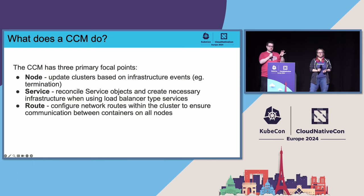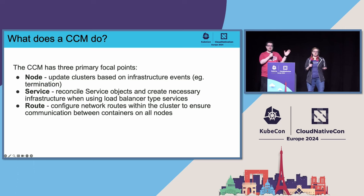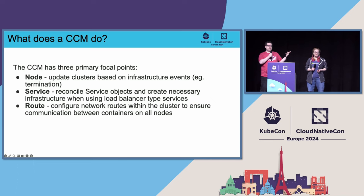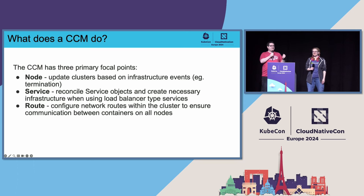There are three main focus areas with a controller loop for each. The first is the node controller, which updates nodes based on infrastructure changes — this is how your cloud lets Kubernetes know that a node is gone and not coming back, and where it sets the node ID. The second is the service controller, which is how you make load balancers — very important, otherwise traffic doesn't get to your apps. And finally, the route controller configures networking routes.